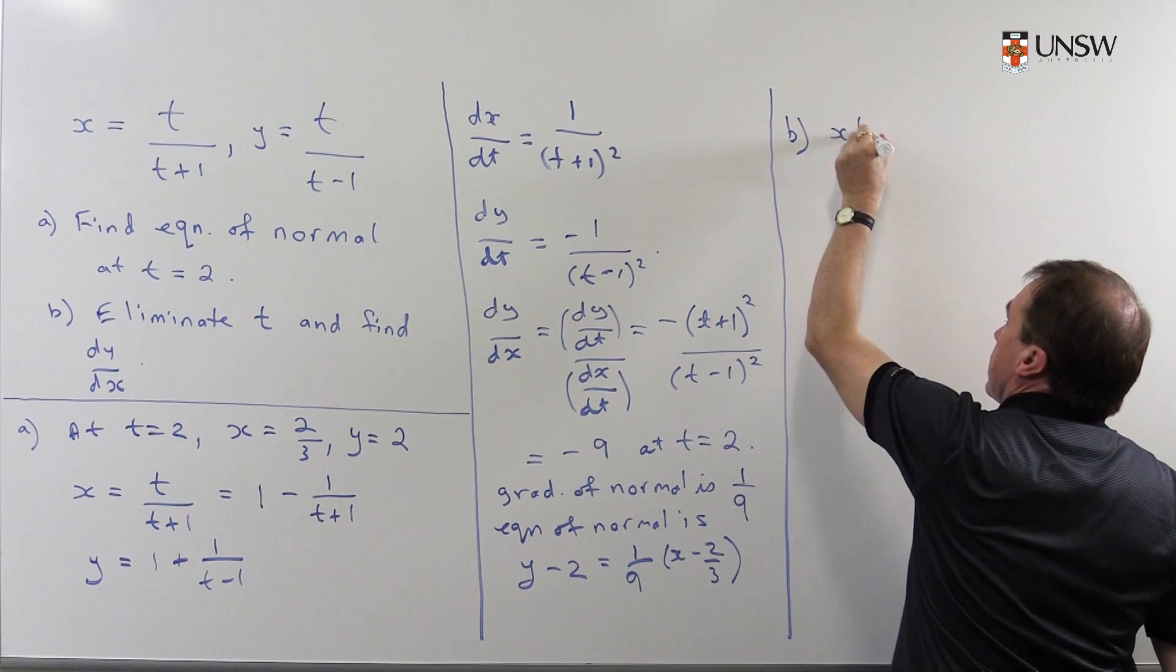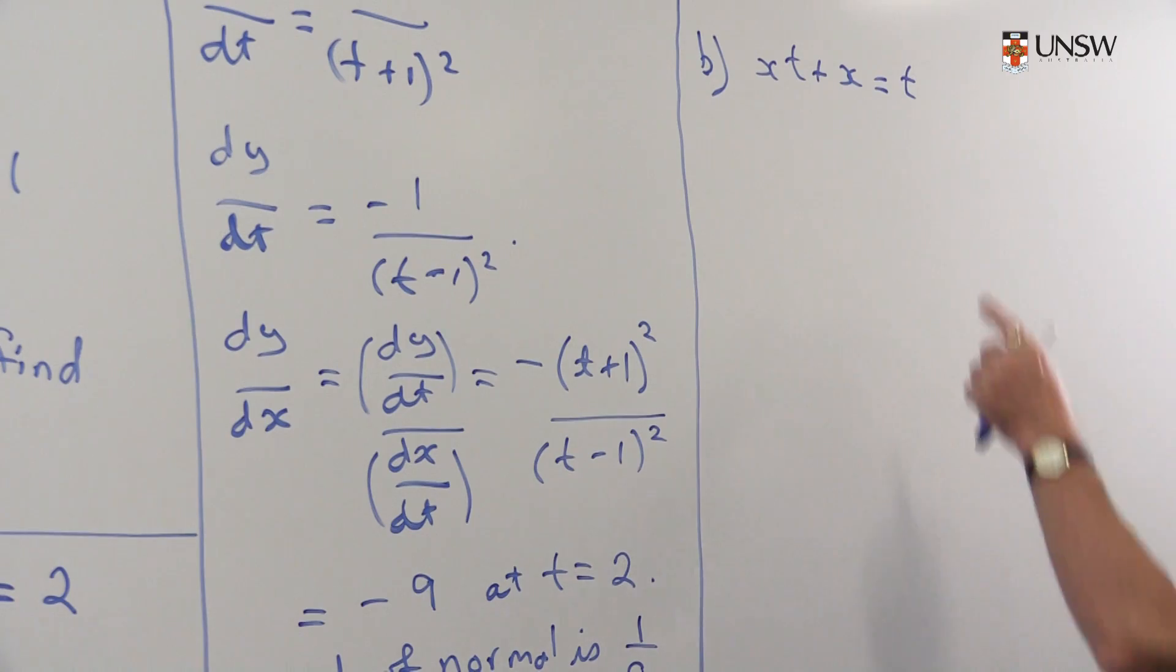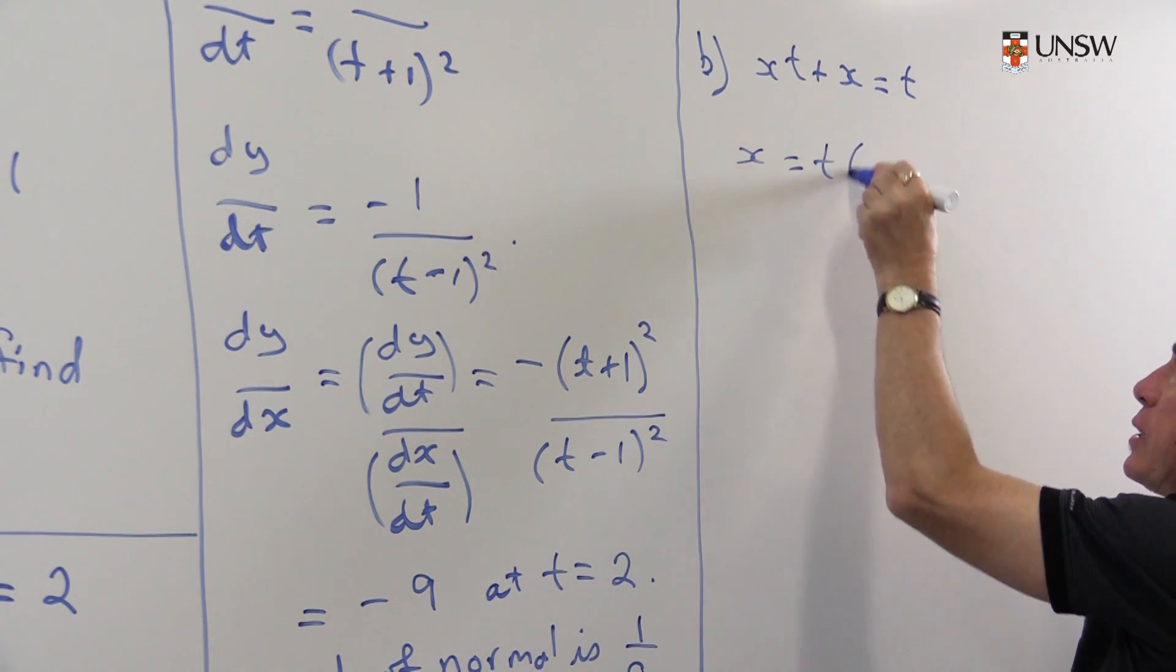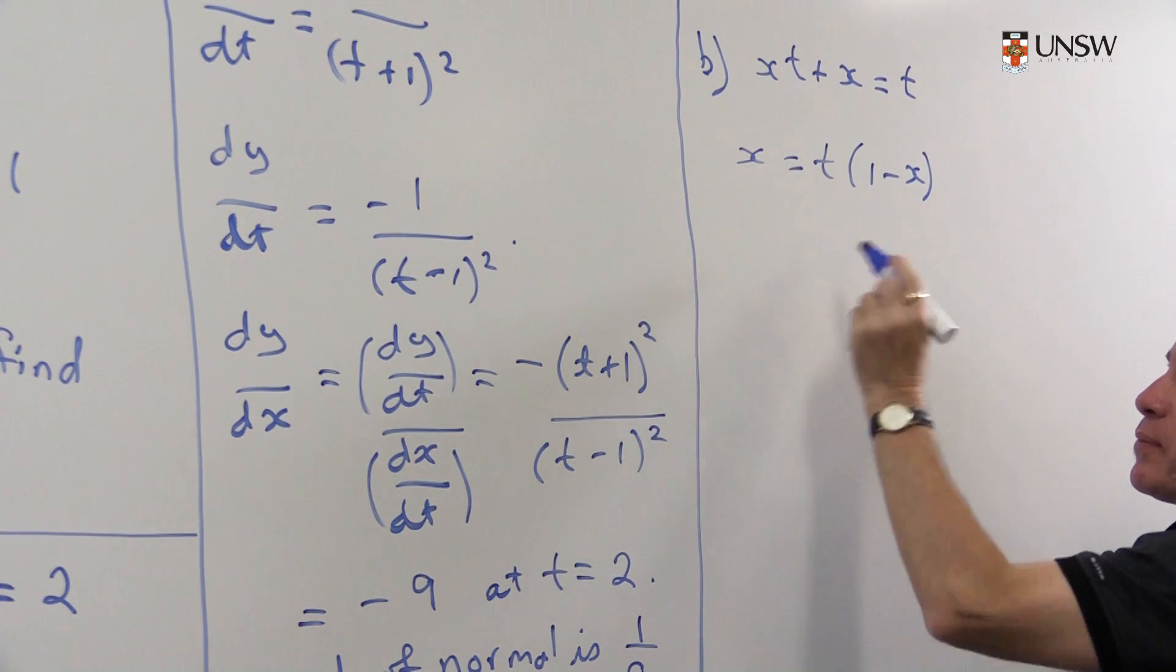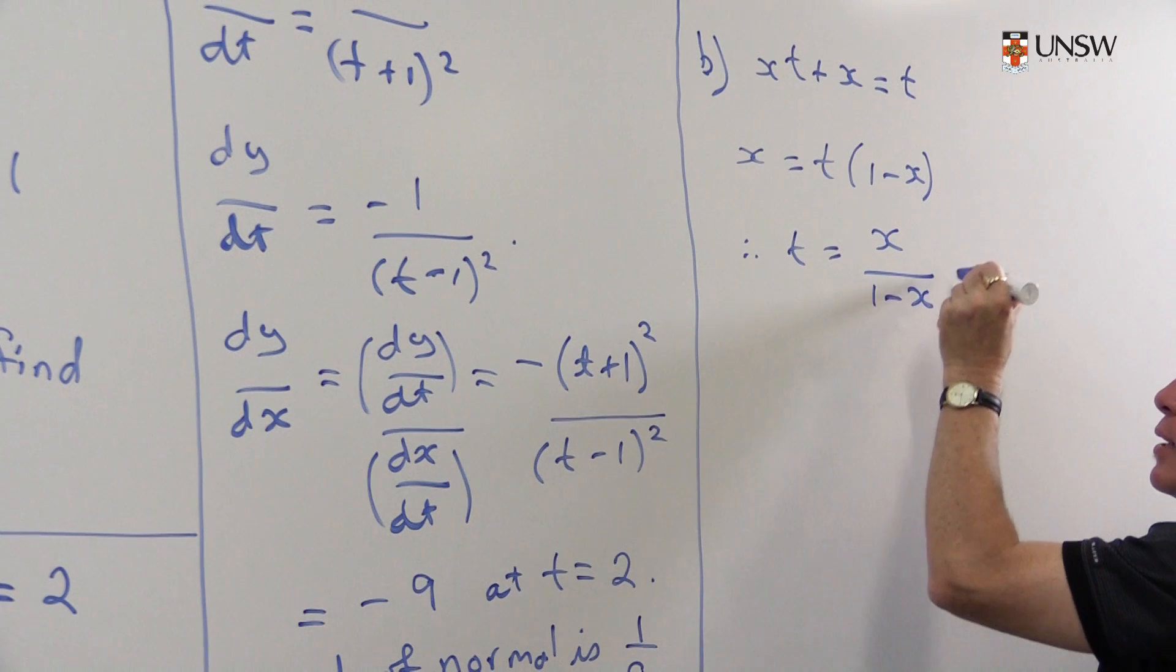So I'm going to get xt plus x equals t. So I'm going to take all the t's over to this side. And so I get x is equal to t into (1-x). And therefore, I can write t then is x over (1-x).